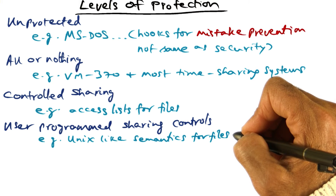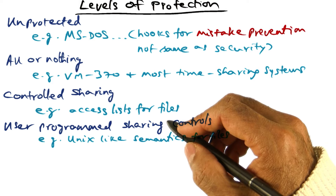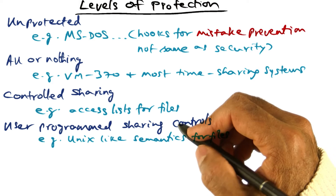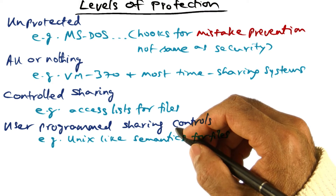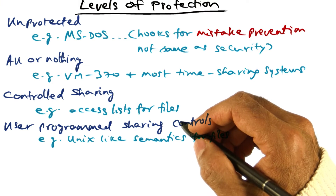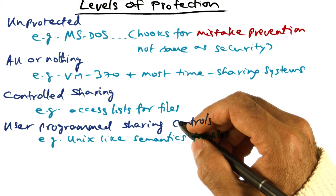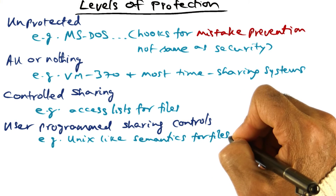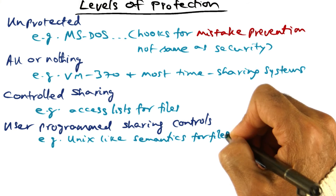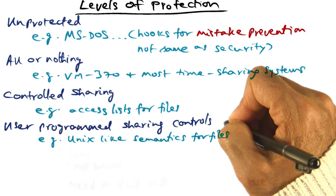Those three levels are: what is the access right for the creator, the owner of the file; what is the access right for a group that is defined; and what is the access right for the rest of the world. That's an example of user programmed sharing controls.